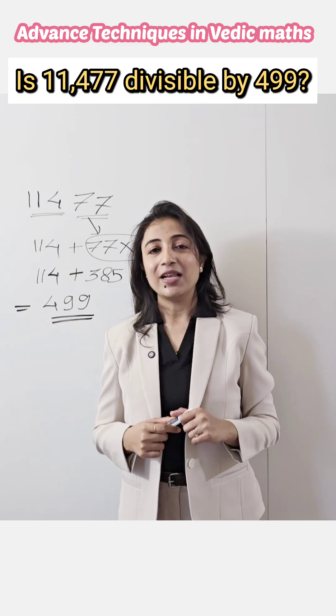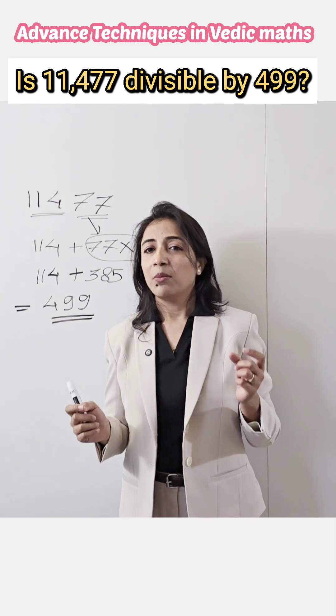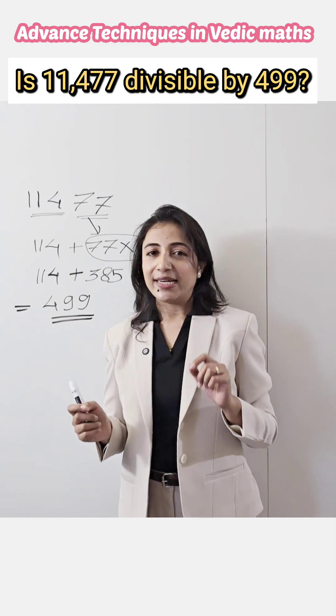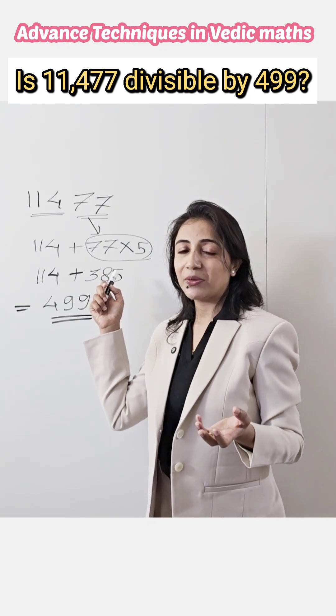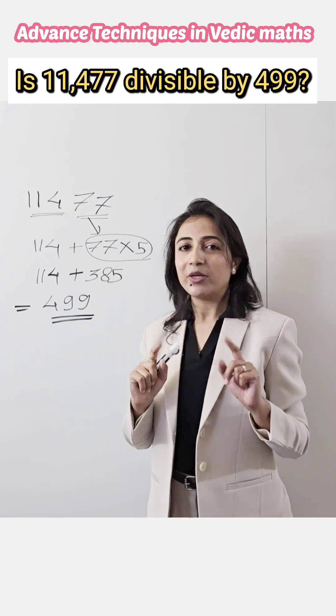Yes, it is very simple with the help of Vedic Maths trick. But have you ever thought, how do we get this multiplier 5? We can multiply it with other numbers, but if we take any other number, it will not work.